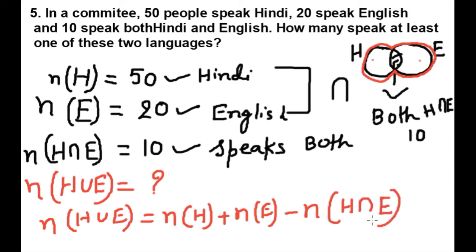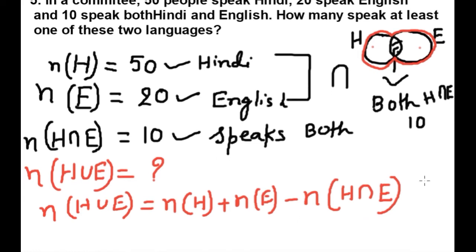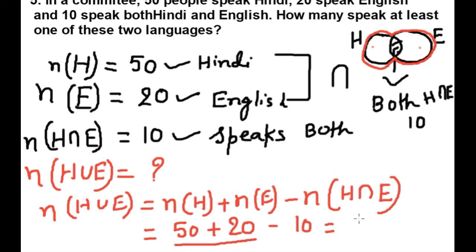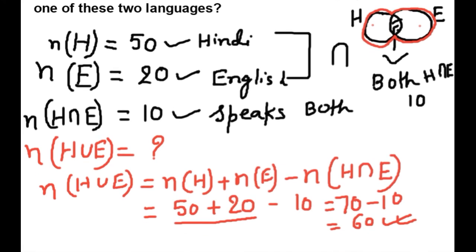Now we will put in the values: 50 plus 20 minus 10. First we do the addition: 70 minus 10 equals 60. This is the answer — 60 people can speak at least one of these two languages.